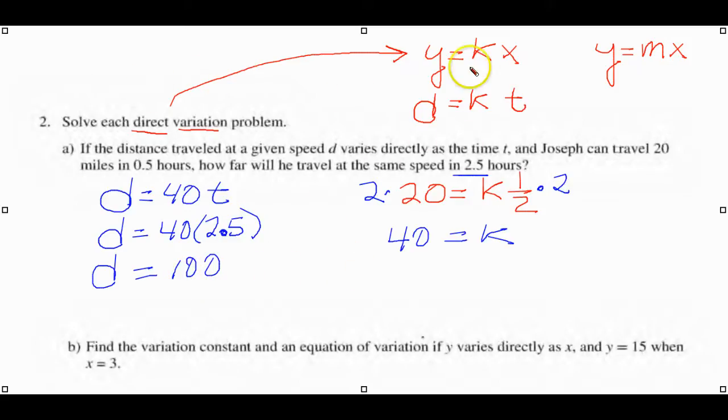We use the formula for direct variation. We knew what D was, we knew what T was, we didn't know what K was. K is the constant of variation. So we substituted for D, substituted for T, found out what K was, and then we use that in the next example to find the distance with this amount of time.